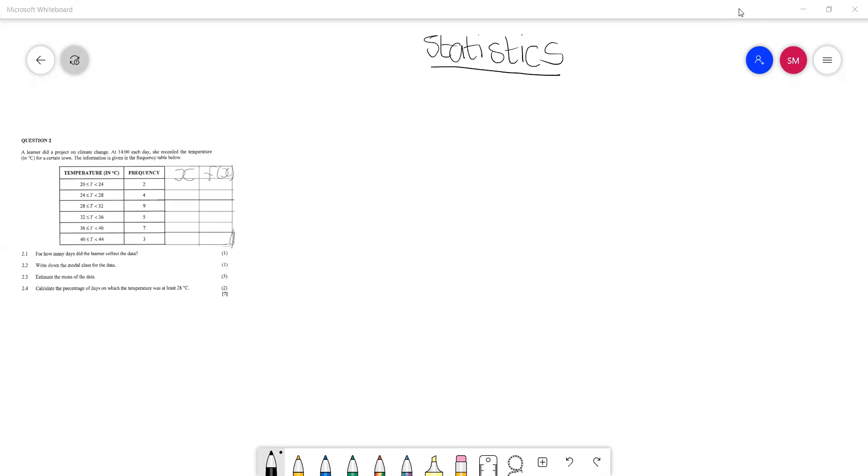So this is an extract from a past question paper and it was in question two. And the question was saying, Elena did a project on climate change at two each day. That she recorded the temperature in degrees Celsius for a certain town. The information is given in the frequency table below. And then we are given the temperature in degrees Celsius in intervals, and then we have a frequency for each interval.